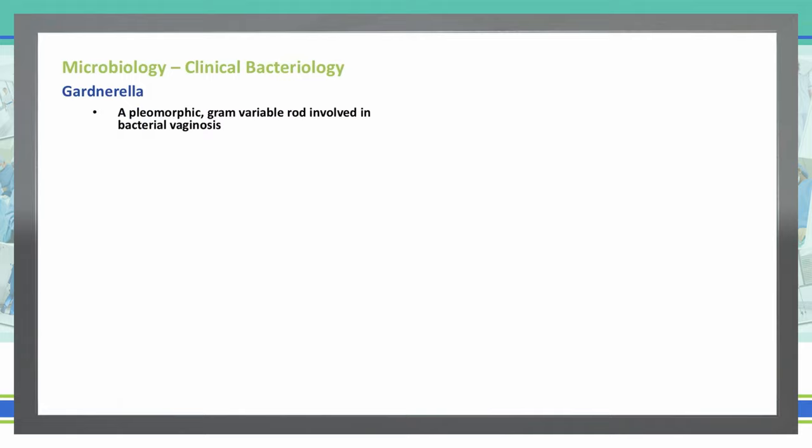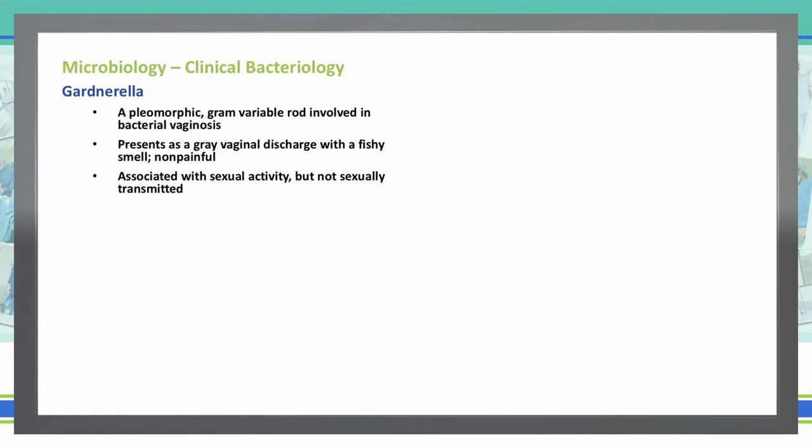It does have a gram-positive cell wall ultrastructure, but it doesn't have that classic cell wall lipopolysaccharide. It presents as a gray vaginal discharge with a fishy smell, and there's no pain associated with it. This is associated with sexual activity, however it's not an STD or a sexually transmitted disease.